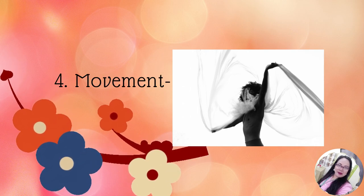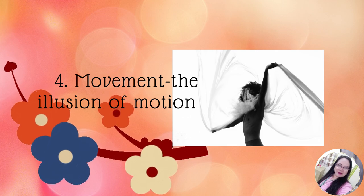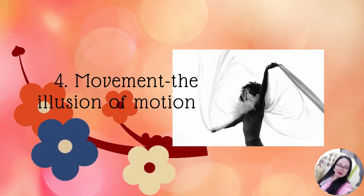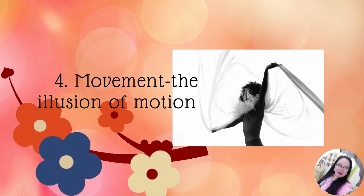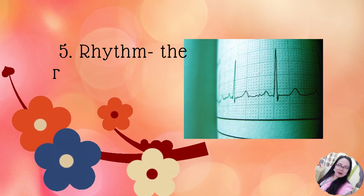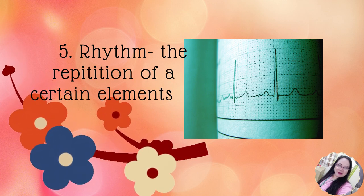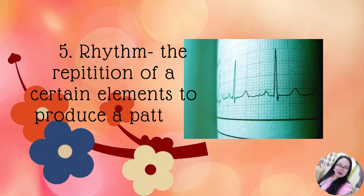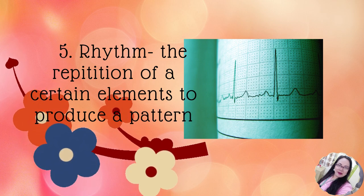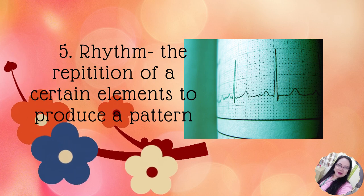Number four is movement. In arts, movement is the illusion of motion in a painting, sculpture, design, or in a piece of art. Number five is rhythm. This refers to the repetition of certain elements to produce a pattern. In visual arts, repeated design elements may create a certain flow and may lead the viewer's eyes.